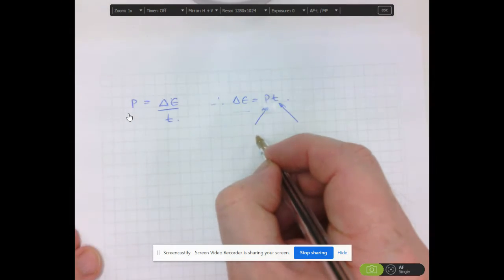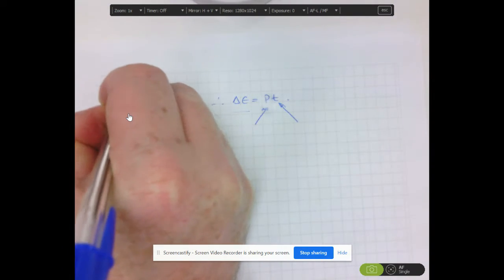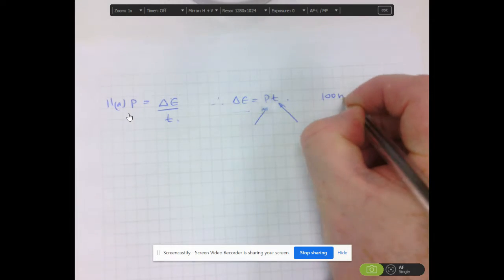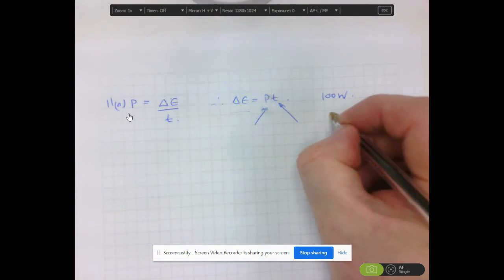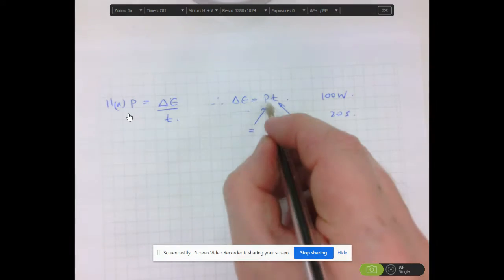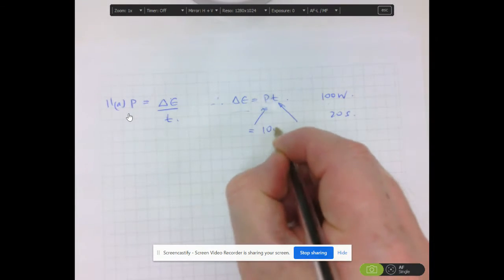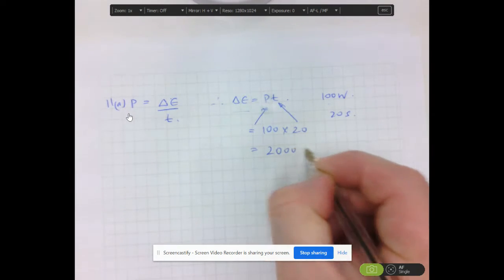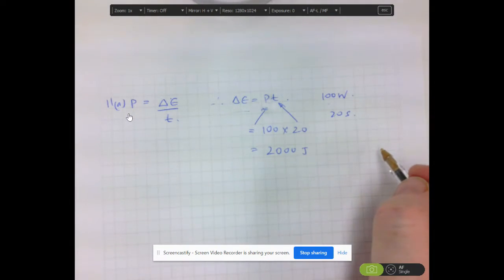So applying it to this question, which is 11a, we have a 100 watt light bulb that is in operation for 20 seconds. This is very straightforward. We have a power rating of 100 times 20, and that will be 2,000 joules of energy that is transformed.